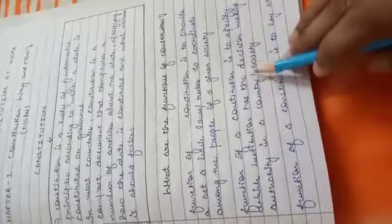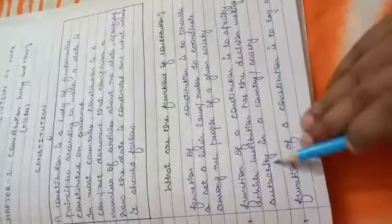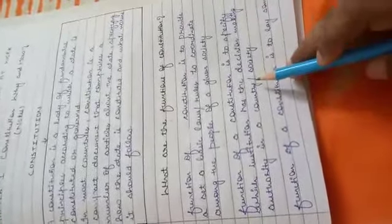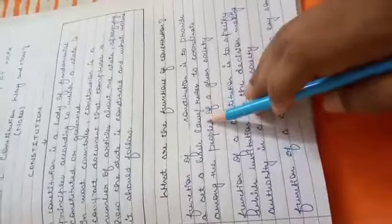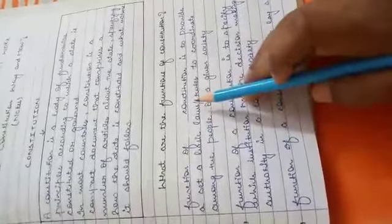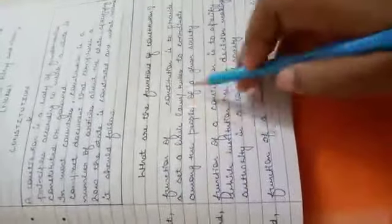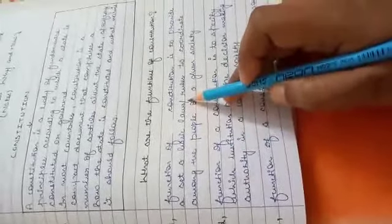Now the second function of a constitution is to specify which institution has the decision-making authority in a country or a society. We agreed on some basic rules to run a society and to cooperate among a society. Now, the second function says that who will make these basic rules.